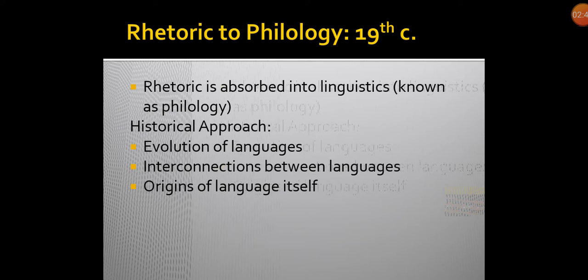Now, this rhetoric, once it was divorced from its actual purpose and ambition, it turned into a very dry and mechanical subject called philology. Philology is mainly concerned with the understanding of the aspects of language — observing those aspects and researching the evolutionary process of language: how it seems to change over time, how languages are interconnected with each other, and their overall origin.